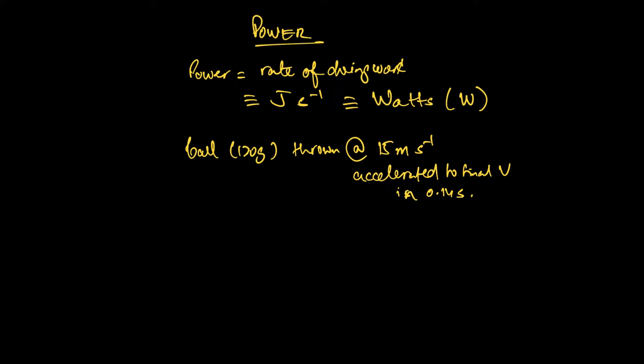So let's figure out what the average power gain of this ball was during the time you threw it. So what's the gain in the kinetic energy? The kinetic energy is half mv squared, which is half times 0.12 kilograms. Remember to convert to SI units. And then you have 15 meters per second squared, which brings us to 13 and a half joules.